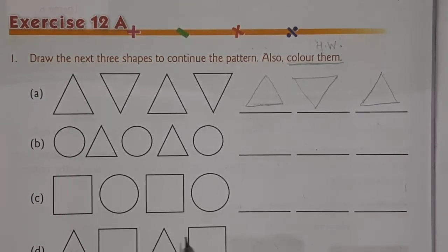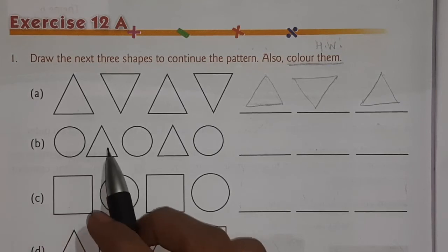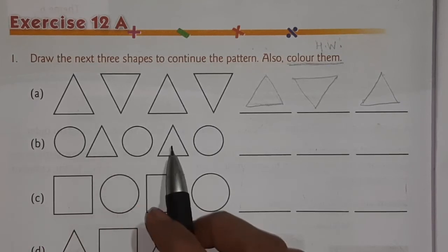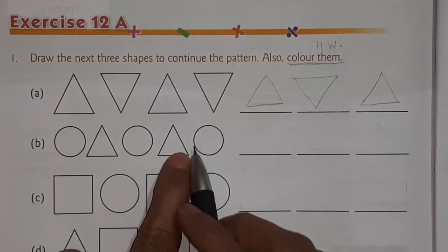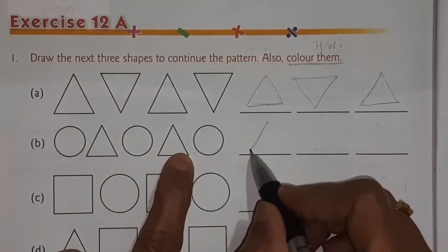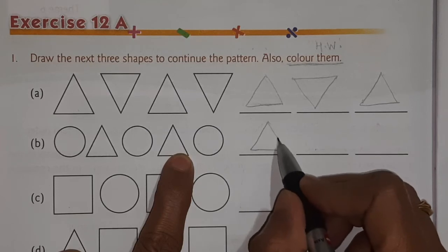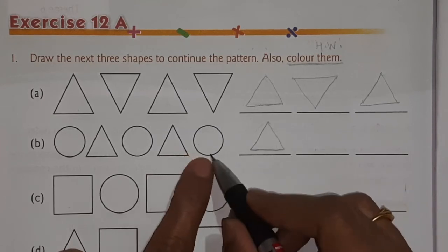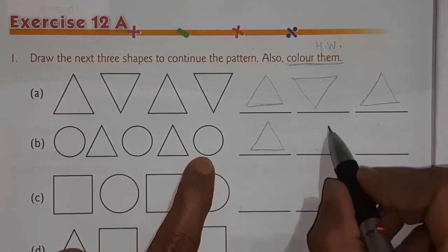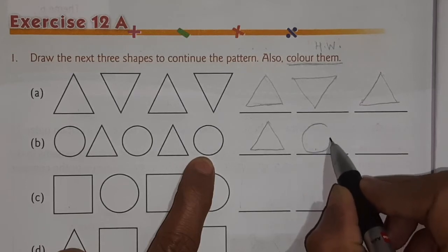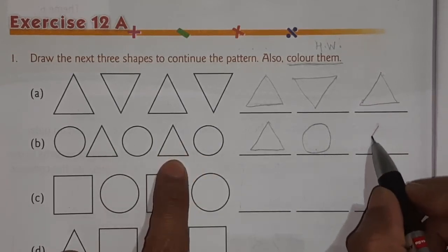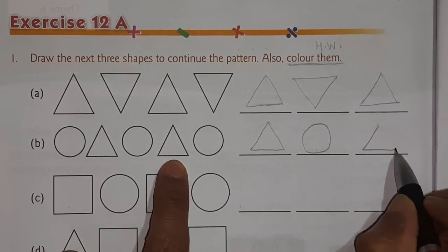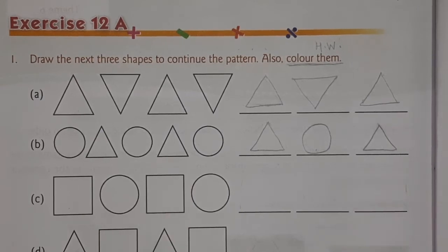Next pattern: circle, triangle, circle, triangle, circle — so circle follows, then triangle. Next one will come: triangle. After triangle what is there? Circle — so we will draw circle. And after circle what is there? Triangle — so again we are going to draw triangle. Now you have to color it, but afterwards.